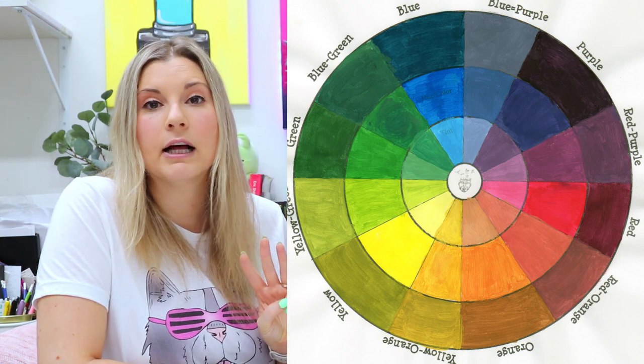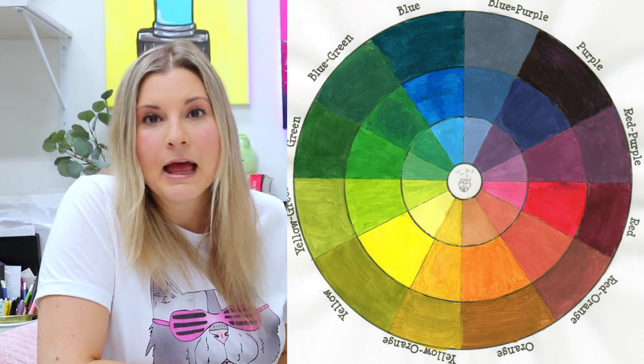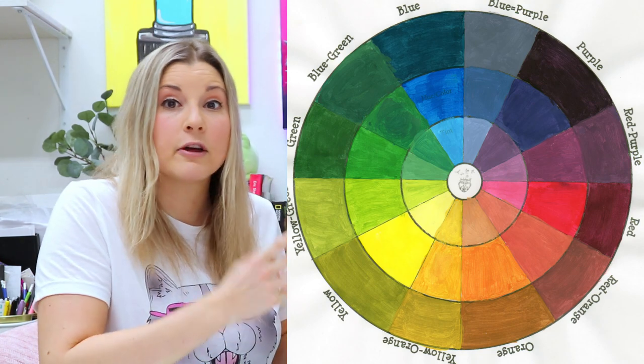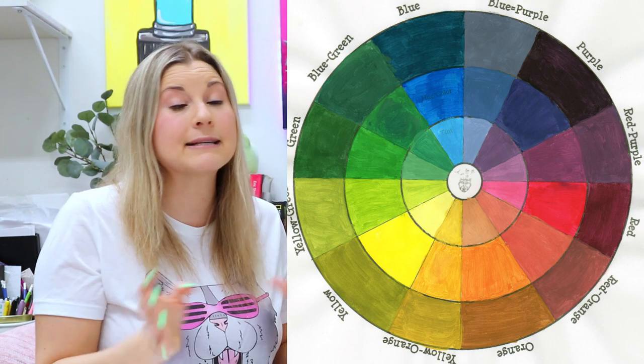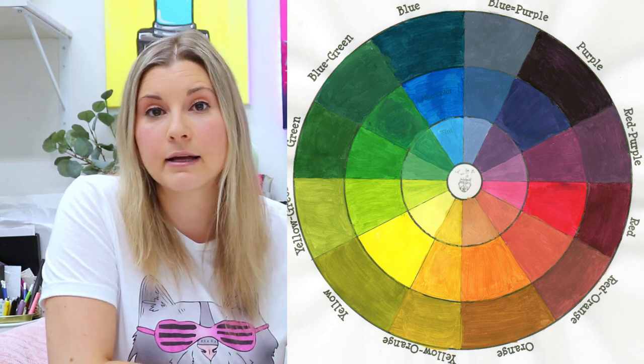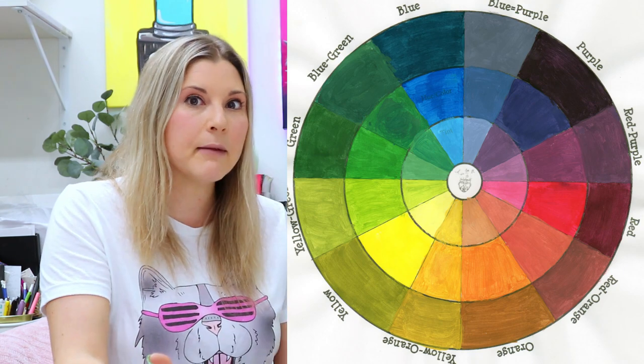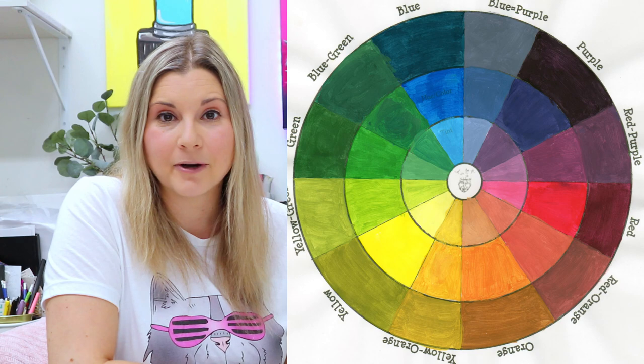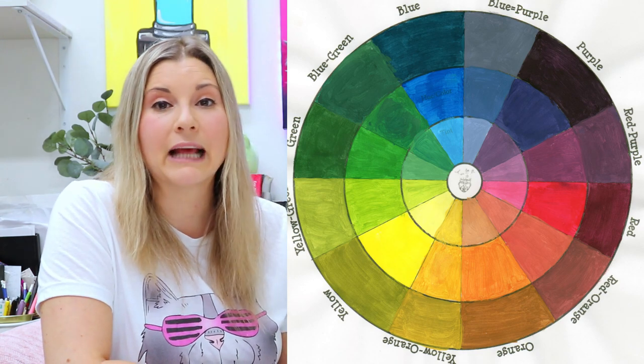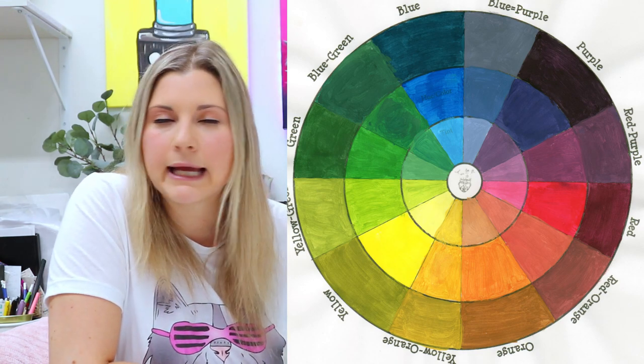There are three colors that we cannot make, and those colors are called the primary colors. We cannot make primary colors, so we cannot mix anything together to make primary colors. And our primary colors are red, blue, and yellow.